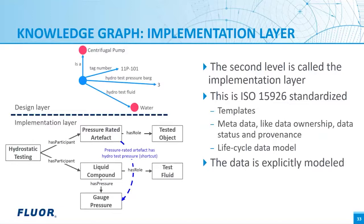There is a second level called the implementation layer — that level is ISO 15926 compliant. From the design layer to the implementation layer, automatic data transformation is used, so it does not require keying, manual action, or mapping actions from the engineers. The implementation layer is all in ISO 15926 compliant structures. The standard uses templates to generate the semantic web data — templates are small sets of facts in the semantic web language. The implementation layer has metadata like data status — for example, preliminary, release for design, release for construction — and metadata also takes care of data ownership, such as process department, mechanical, or supplier data, and provenance to know who created the data.